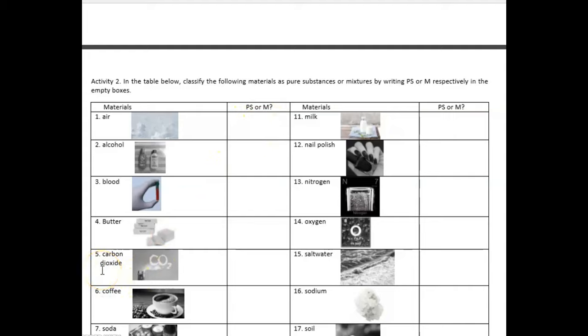Example number 5. We have the carbon dioxide. So, carbon dioxide is an example of... Very good. It is an example of a compound. So, a compound is an example of pure substance. That's why you're going to write here P, S. Okay?